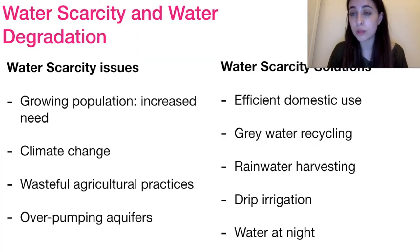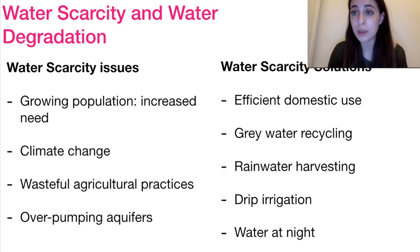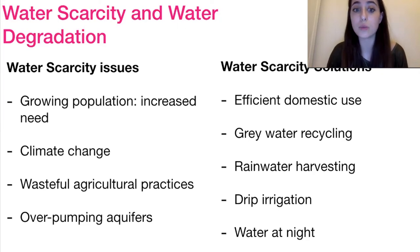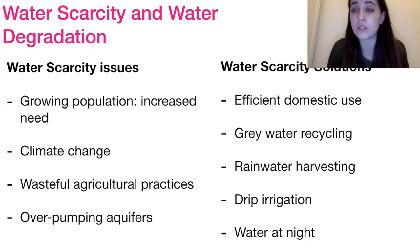The main problems in water systems are water scarcity and water degradation. Water scarcity is the lack of water. Many countries have growing populations, increasing demand on this resource, and climate change plus wasteful agricultural practices further impact water scarcity, alongside over-pumping of non-renewable aquifers. Solutions include efficient domestic use, minimizing individual water waste, rainwater recycling and harvesting, and drip irrigation or watering at night — two ways to reduce evaporation and reduce water waste.